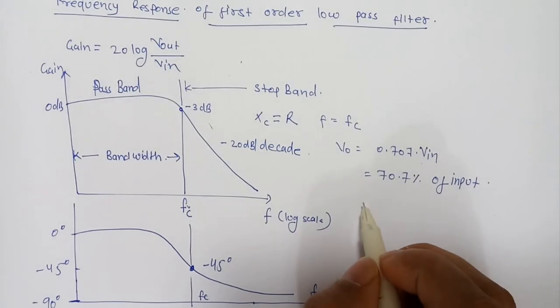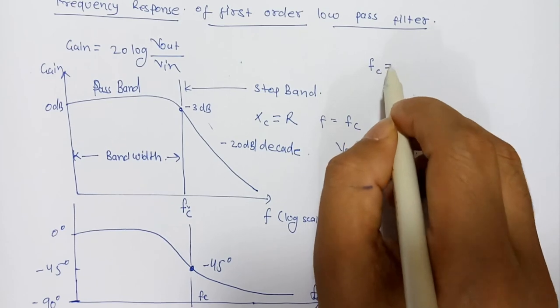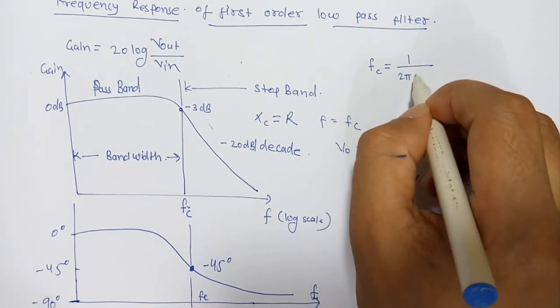If we calculate the cutoff frequency of this low pass filter, Fc = 1/(2πRC).